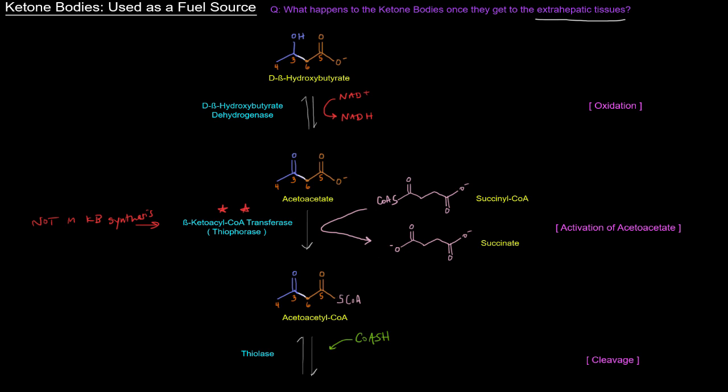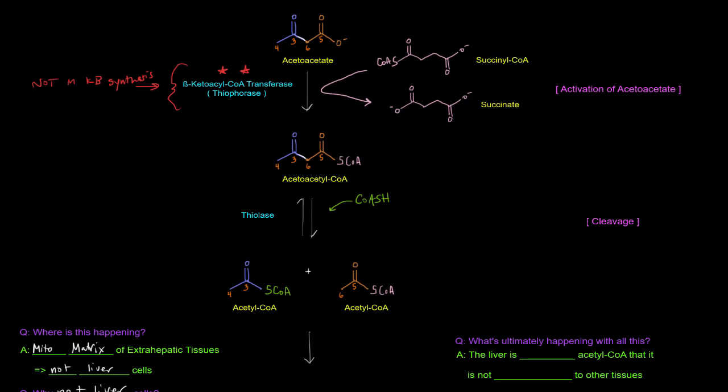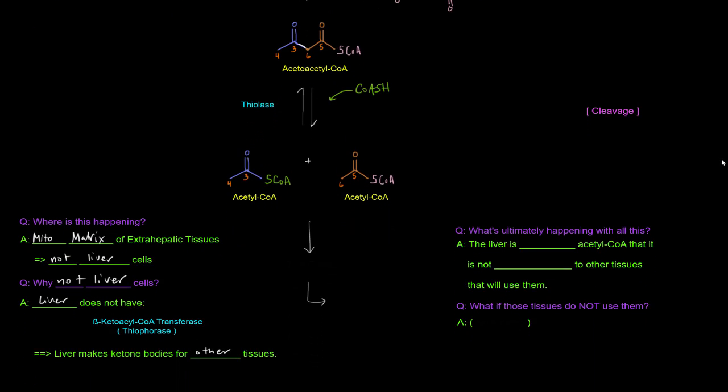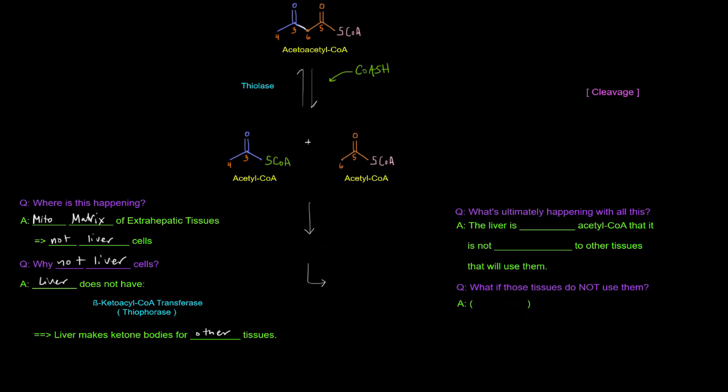It's only in the pathway of using the ketone bodies as a source of energy, breaking the ketone body down basically back into two acetyl-CoAs. This enzyme is necessary in order to do that. And this is not in liver cells, so liver cells can't use ketone bodies for energy. But other cells that have that enzyme can.